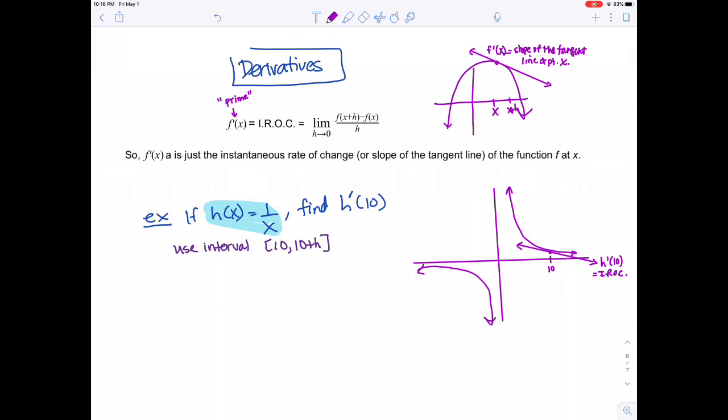When finding a slope at a particular point, you have to choose an interval. In this case, we're using 10 to 10 plus h. We'll try to get as close to 10 as possible by taking the limit as h approaches 0.